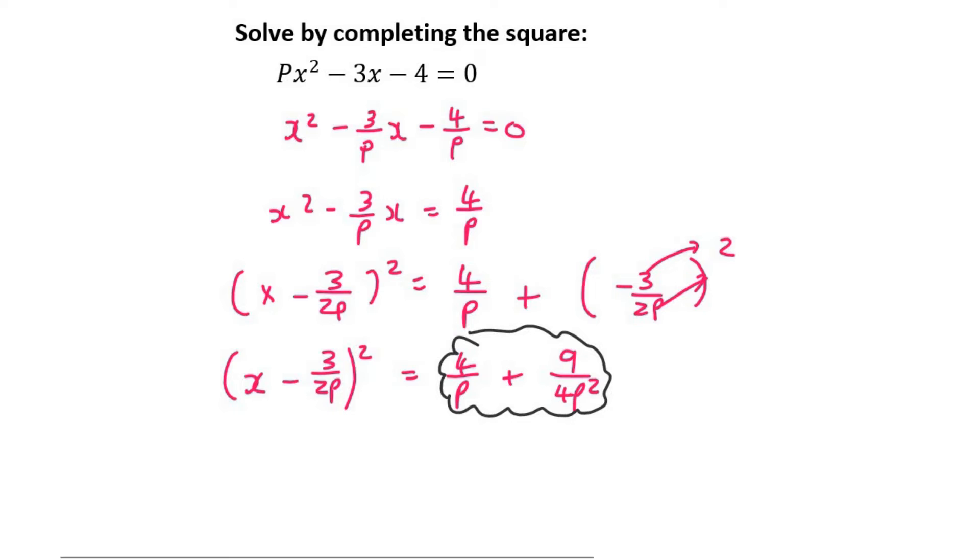But to put them together you need a common denominator. Now that common denominator is going to be 4p squared. So what that means is we're going to have to multiply this by 4p, and what you do to the bottom you must do to the top.